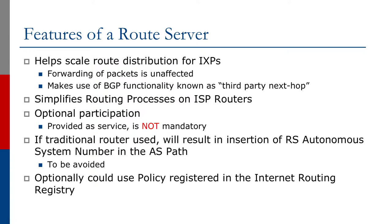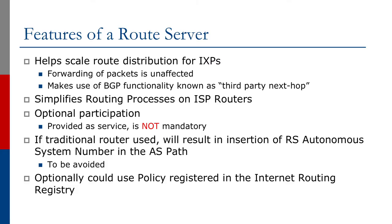Participation is never mandatory. If a traditional router is used — and that's getting rarer and rarer these days — it will result in insertion of the route server autonomous system number in the AS path. We generally want to avoid this, as the route server is there to scale route distribution, not look like an alternative path through the Exchange Point. Route servers can optionally use policy registered in the Internet Routing Registry to facilitate peering configuration between Exchange Point members.